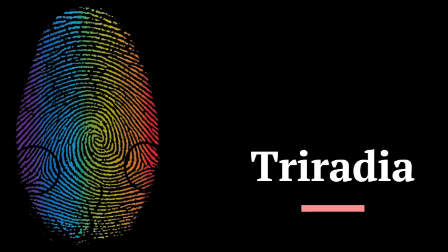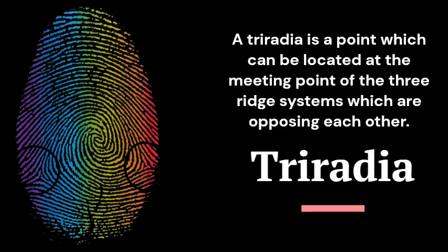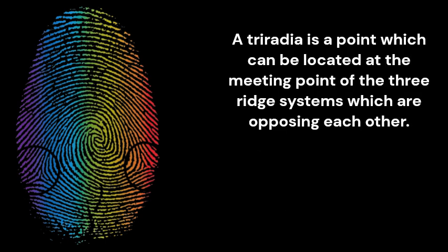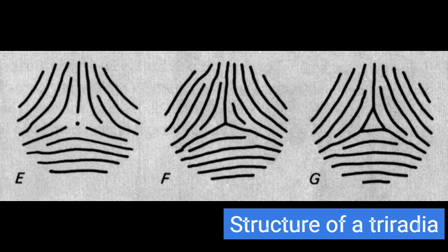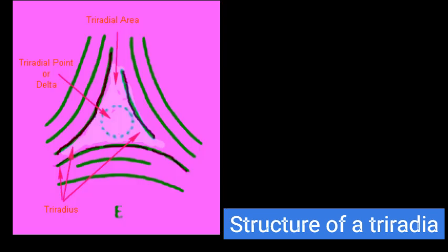These patterns are distinguished on the basis of the presence or absence of a triradius. A triradius is a point which can be located at the meeting point of three ridge systems which are opposing each other. As you can see, a triradius is a point where ridges moving in three different directions meet. A triradius is most often characterized by a point called delta.